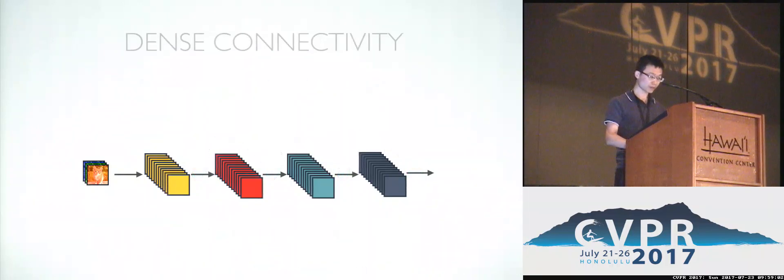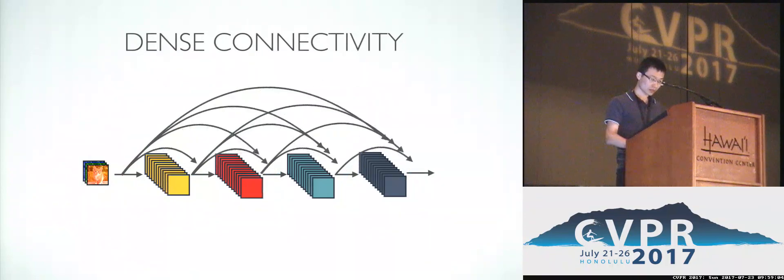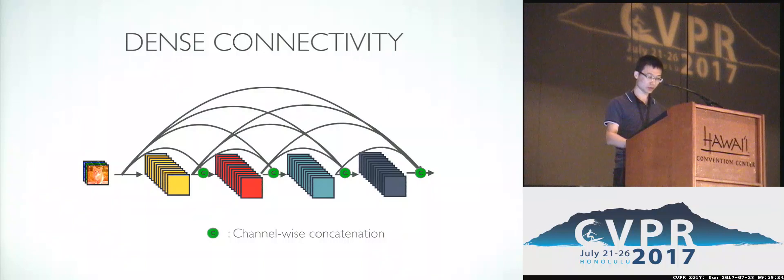In this paper, we propose a new connectivity pattern which is called dense connectivity. The idea is quite simple. In this network, we connect every two layers in the network. So each layer receives signals from all its preceding layers, and the input is combined by channel-wise concatenation, which I will talk about in detail later.